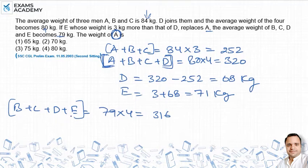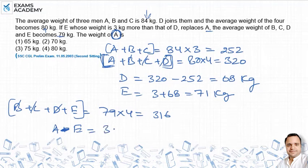तो A minus E बराबर कितना हो जाएगा - 320 minus 316, that is equal to 4. A positive है, E minus में आ जाएगा. तो A minus E = 4.